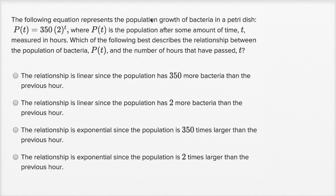The following equation represents the population growth of bacteria in a Petri dish. The population as a function of time is equal to 350 times 2 to the t power, where P(t) is the population after some amount of time t, measured in hours.